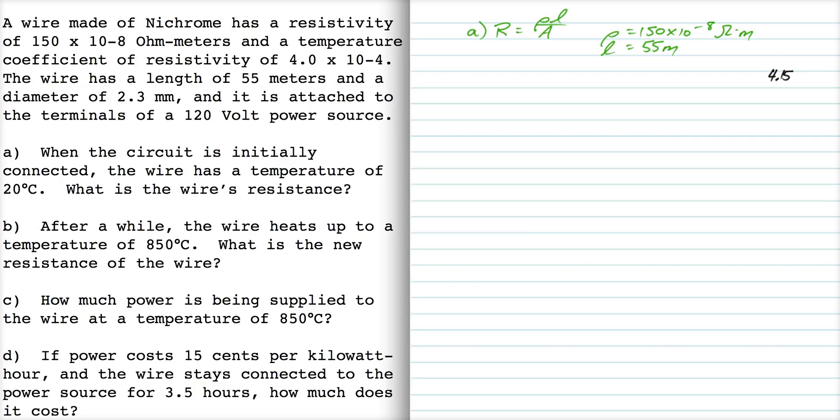As far as the area of the wire, we have to calculate that. There's two ways to do it. You can say that it's πr². So since the diameter of the wire is 2.3 millimeters, the radius would be 1.15 millimeters.